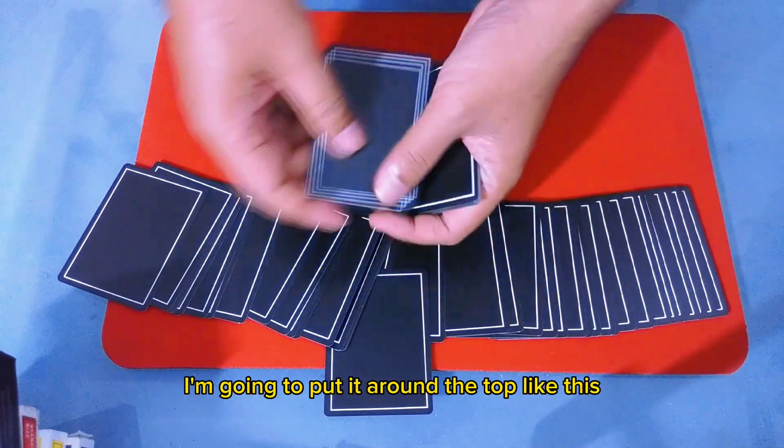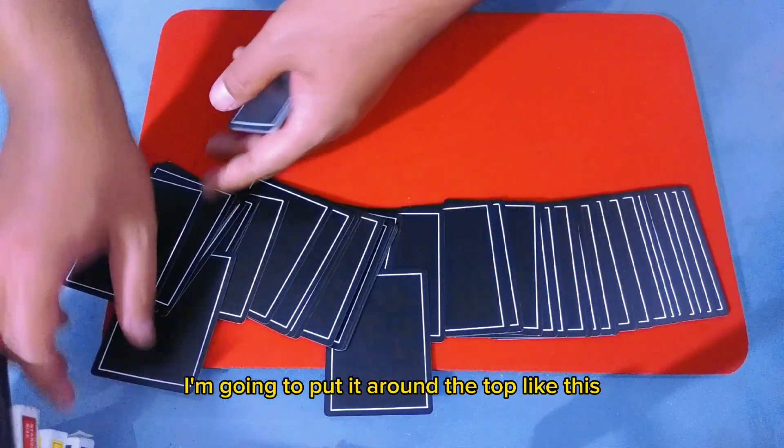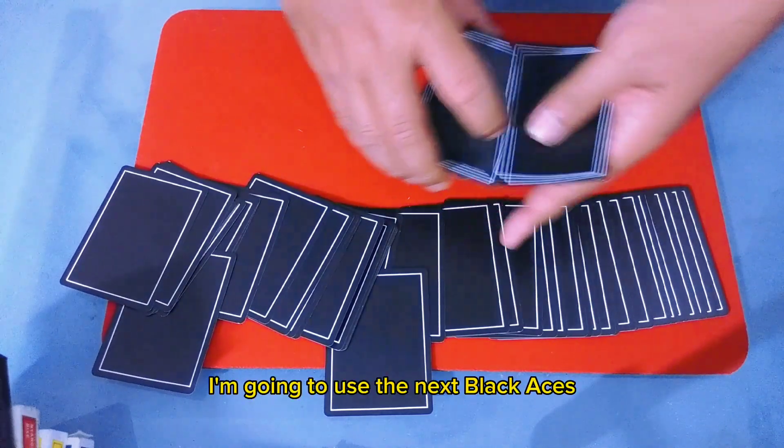Let's say we have the Ace of Clubs. I'm gonna put it around the top like this. I'm gonna use the next black ace.